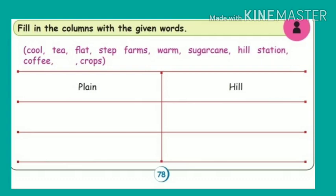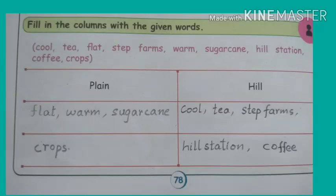Fill in the columns with the given words: cool, tea, flat, step forms, warm, sugarcane, hill station, coffee, crops. From the group of words, 'plain' will go under the plain column. 'Cool' — cool means chill, so cool will come under the hill column. Next, tea — tea grows on hills, so it will come under the hill column. Next, flat — flat is flat land, so flat will come under the plain column.